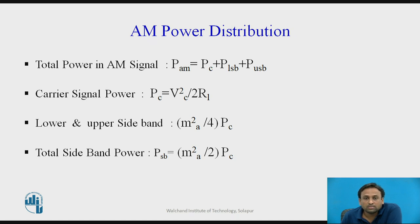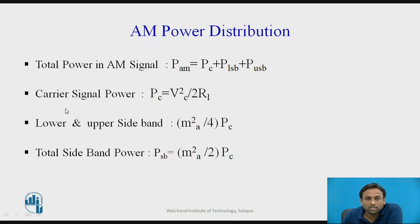Power can be calculated using P = V·I, P = I²·R, or P = V²/R. Since these signals are AC (varying quantities), we use V²/R and take the RMS value, which requires dividing peak voltage by √2. Substituting gives Pc = Vc² / (2R). Similarly, P_LSB and P_USB each equal (m²/4)·Pc. Total sideband power P_LSB + P_USB = (m²/2)·Pc.